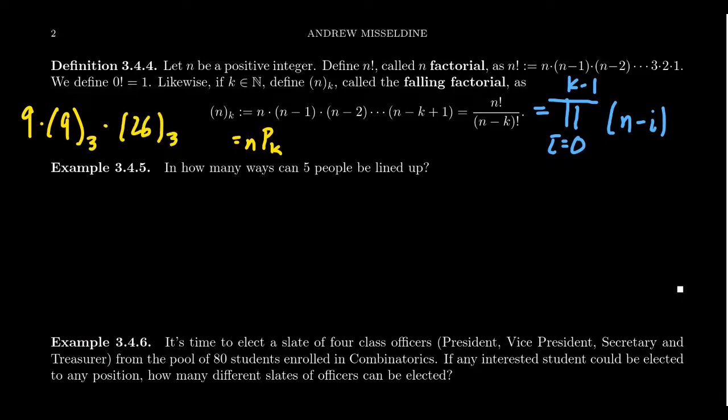We can express answers using these falling factorials. This nPk button that you might see on a calculator, this is an alternative notation. Some people write this as P(n,k). And honestly, because in mathematical typesetting, putting a subscript before a character can be really tedious to type up, some people use this notation as well.